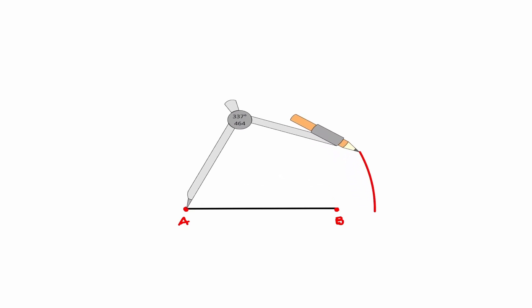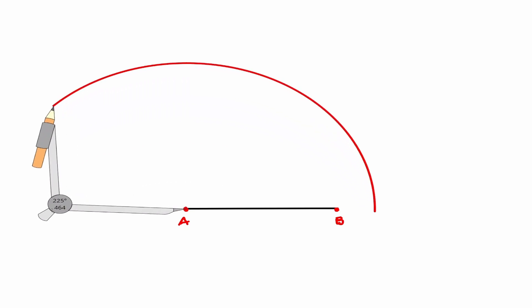Now I'm going to create a mark. Without changing the length of my compass, I'm going to move my metal leg to the other point, which in this case is B.